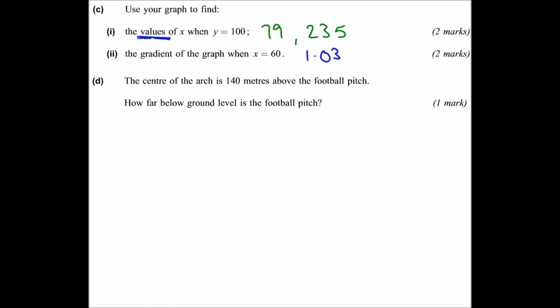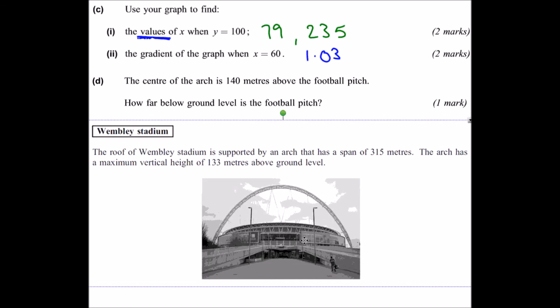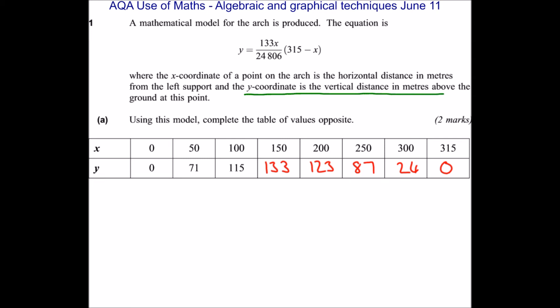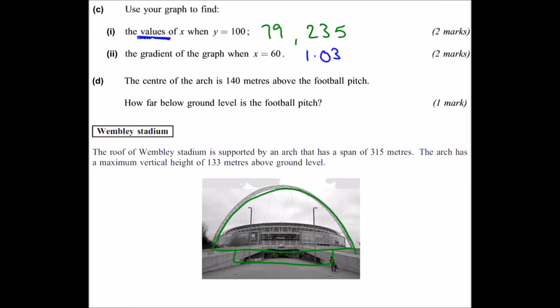For part D, we're told that the centre of the arch is 140 metres above the football pitch. And we're asked how far below ground level is the football pitch. So for that, we're going to have to go back to the pre-release to understand what's going on here. This is the pre-release. And we're told that the roof of Wembley Stadium is supported by an arch that has a span of 315 metres. The arch has a maximum vertical height of 133 metres above the ground. So what's going on here is we've got our arch, we've got our ground level, but then the football pitch is going to be below the ground level. But the information we're given in the original question, let's go back and have a look, is that the y coordinate is the vertical distance in metres above the ground. So if we find the maximum height of our graph, that will tell us how far it is above the ground. And then we just need to find the difference between that and 140 metres to find the depth below the ground of the football pitch.